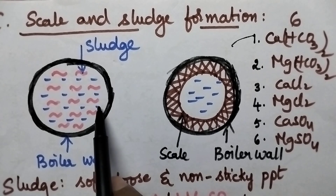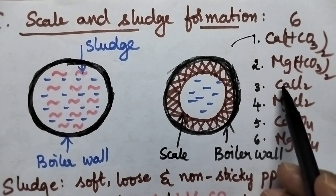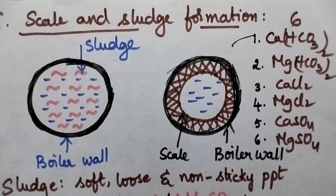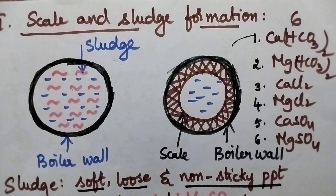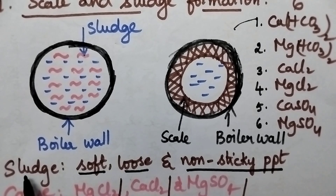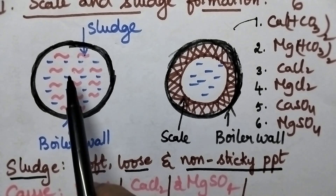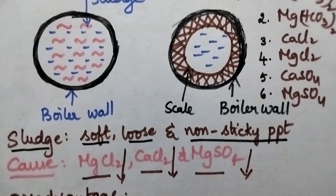Whenever hard water is used in the boilers, during the boiling process these dissolved salts will slowly precipitate out and result in the formation of a soft, loose, non-sticky precipitate. During the boiling process, whenever a soft, loose, and non-sticky precipitate is formed, that is called sludge. So it is sludge formed in the boiler.